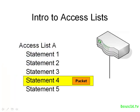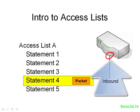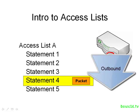Access Lists are often applied to router interfaces. We could apply an Access List right on an interface, and we have a choice. We can use the Access List to filter traffic going into the router, or we can use it to filter traffic leaving the router — either inbound or outbound.